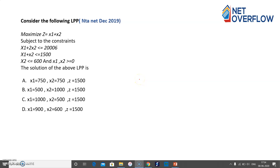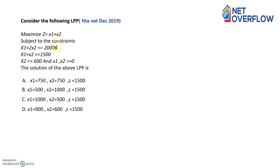Hello everyone, welcome to my channel. Today we are going to do a question based on LPP. This question was asked in December 2019. The question is: maximize z = x1 + x2, subject to the constraints x1 + 2x2 ≤ 2000, x1 + x2 ≤ 1500, x2 ≤ 600, and x1, x2 ≥ 0. You have to mark the right option from the four given.